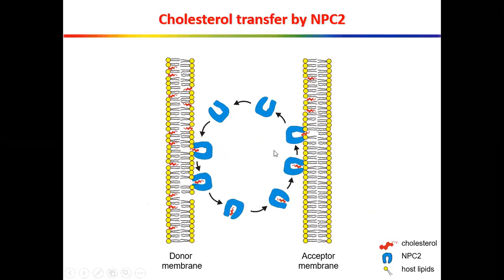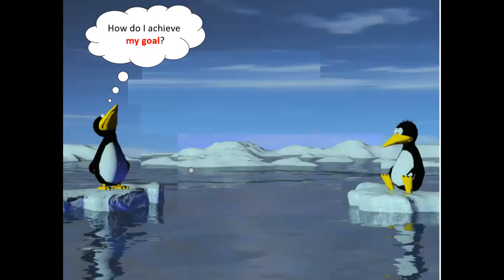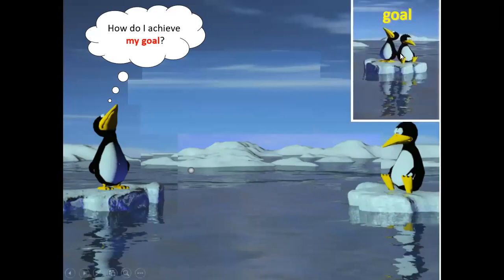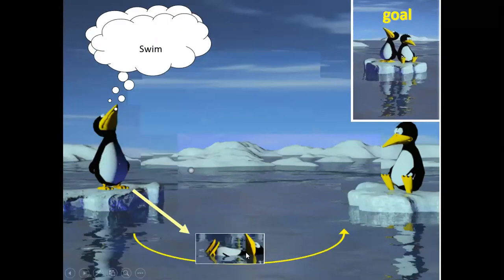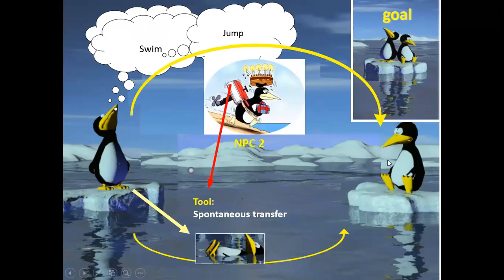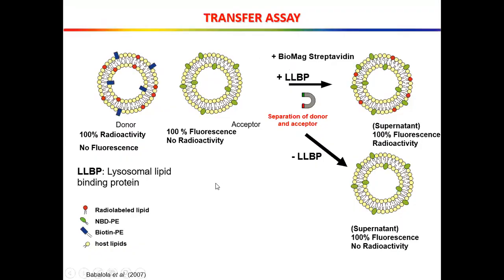This is the kind of experiment we have in mind. MPC2 moves between one membrane and the other — you have a donor, and it picks up cholesterol and transfers it to the receptor. Without MPC2, there will still be spontaneous transfer, like swimming across. But it's not going to be as much as when you have MPC2 acting as a parachute to facilitate the transfer.